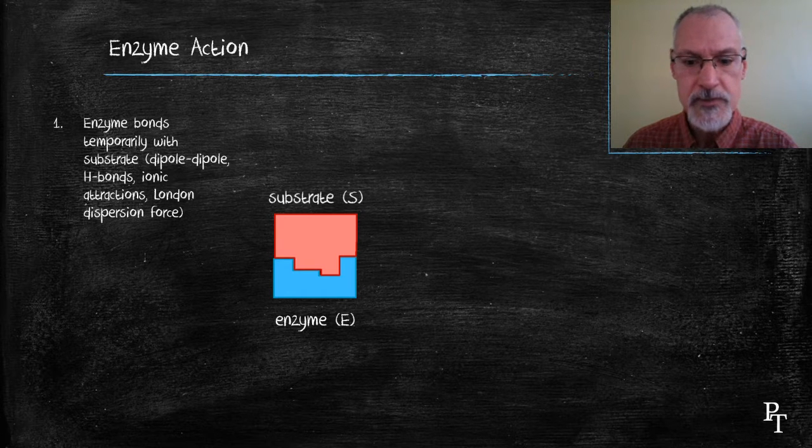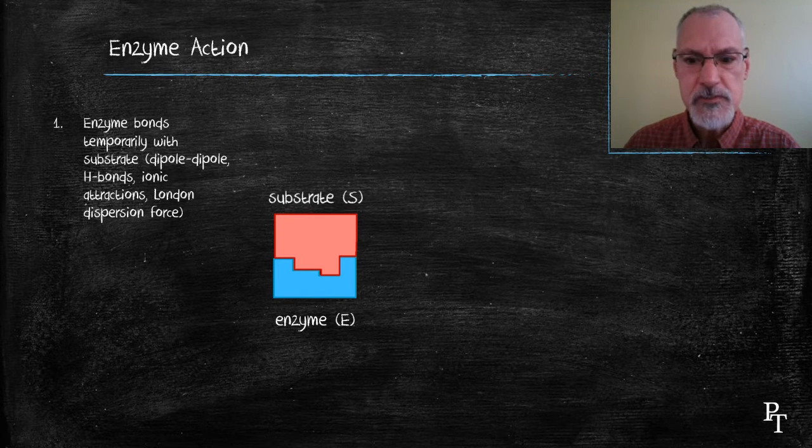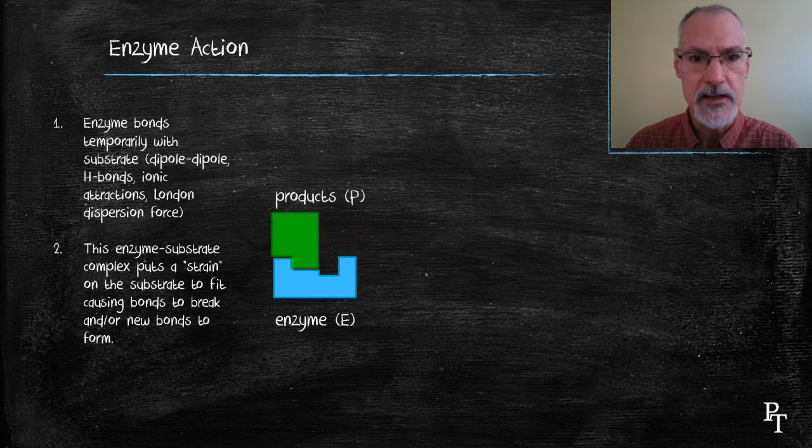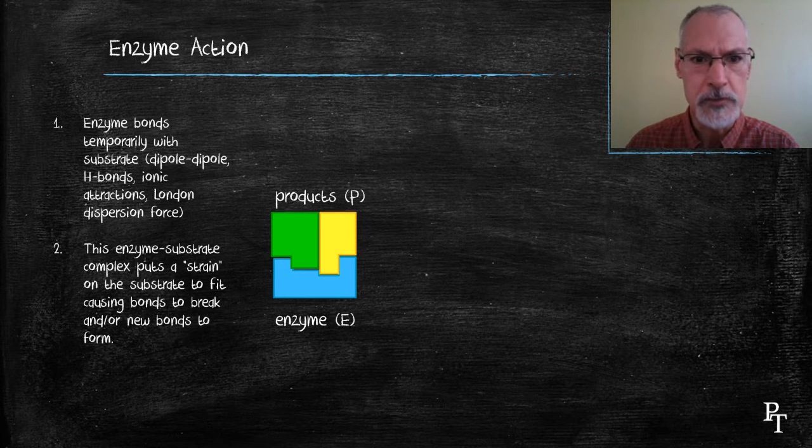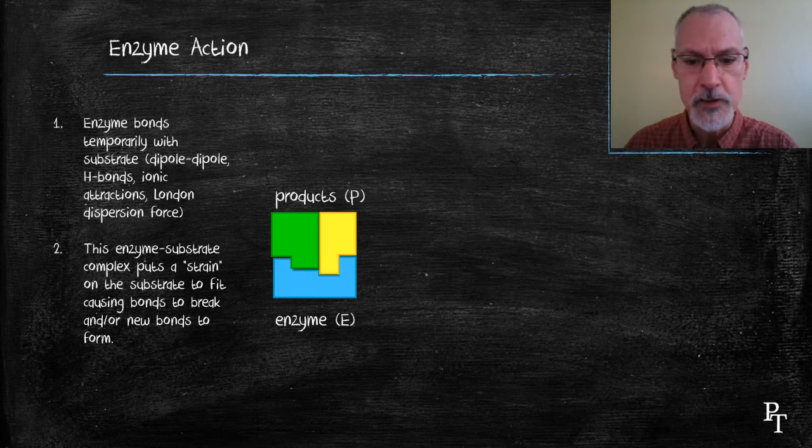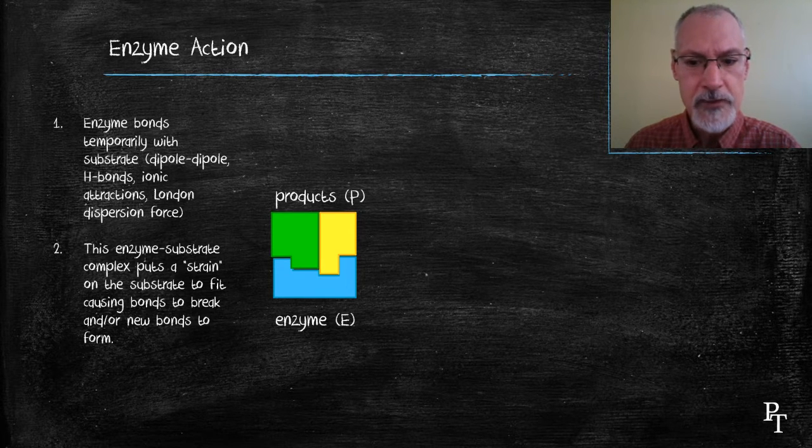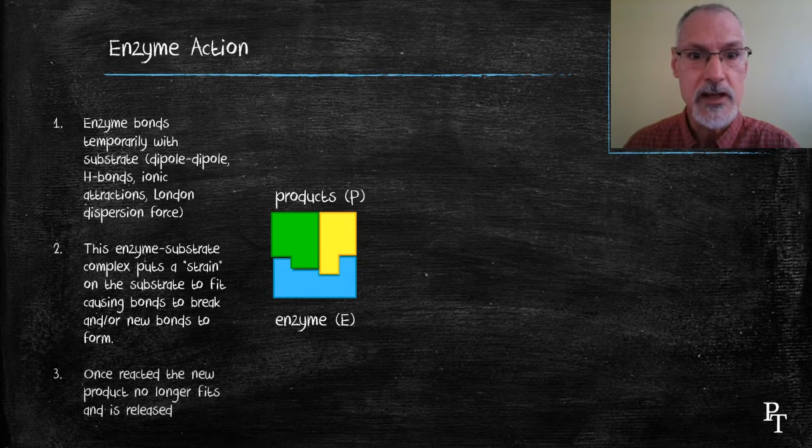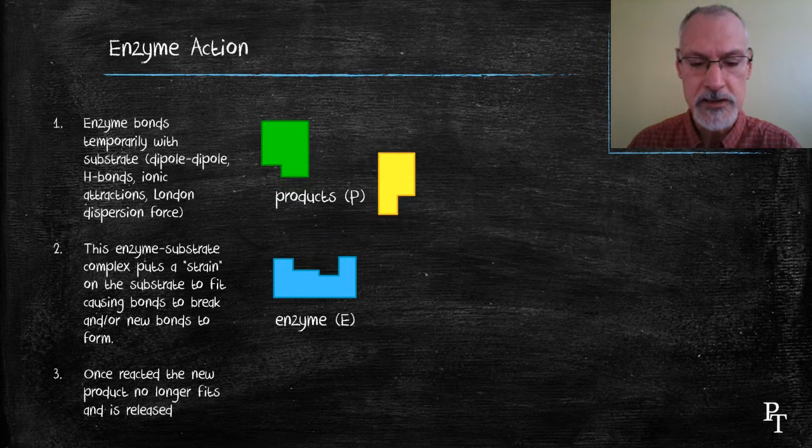When that substrate combines with our enzyme, it pushes stress on the combining substance, causing it to bend or fold in a somewhat cumbersome way, straining it and thereby inducing it to form our products. Those products are then released from our enzyme so that it can react with other substrate molecules.